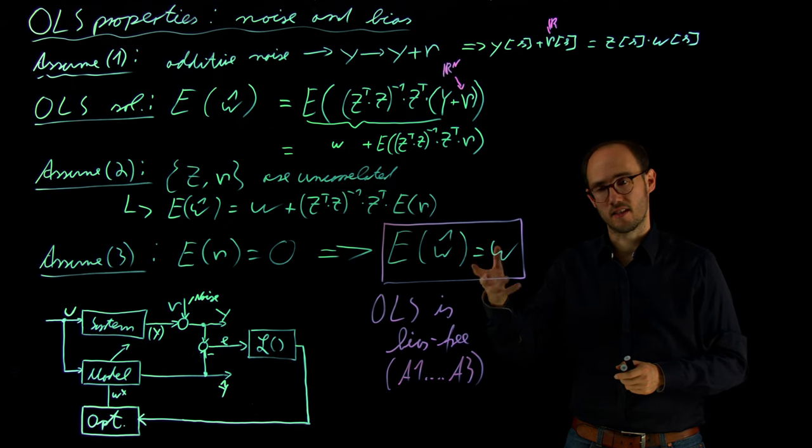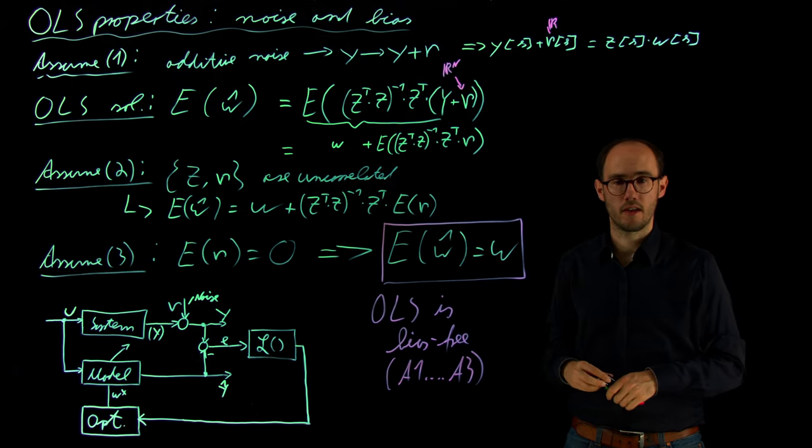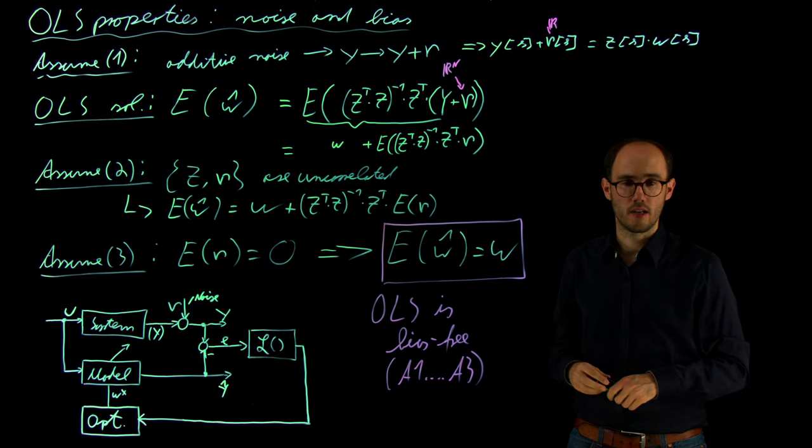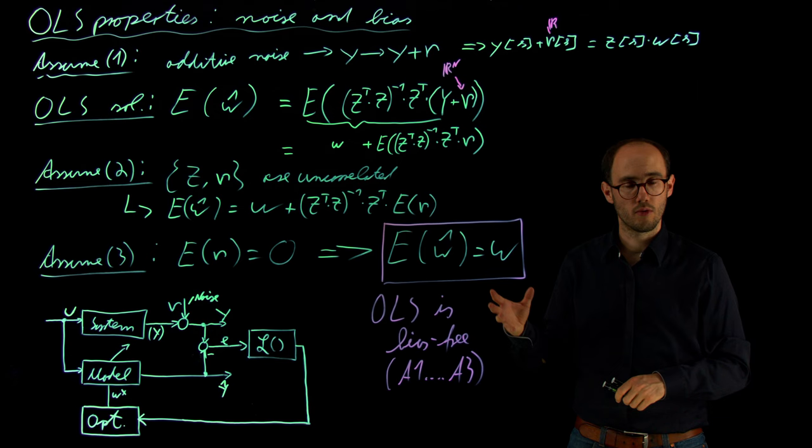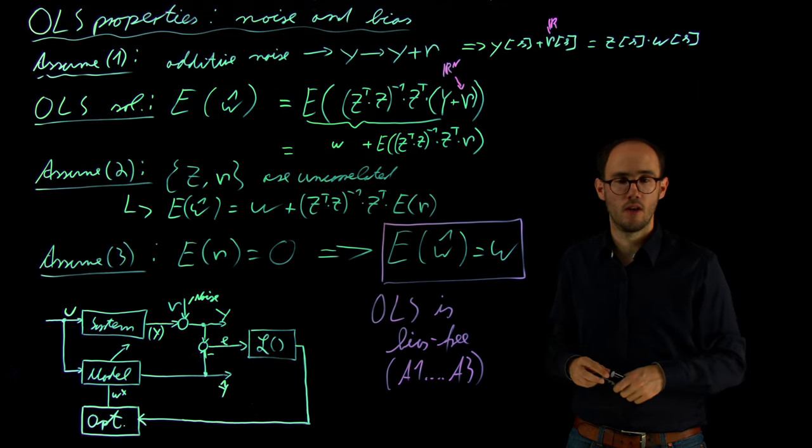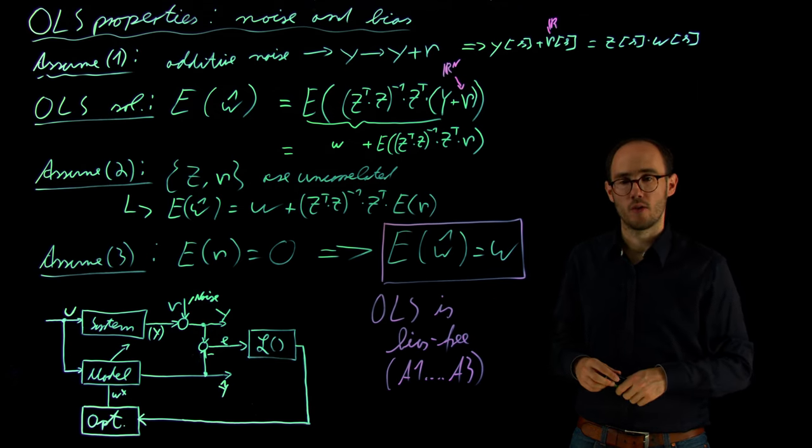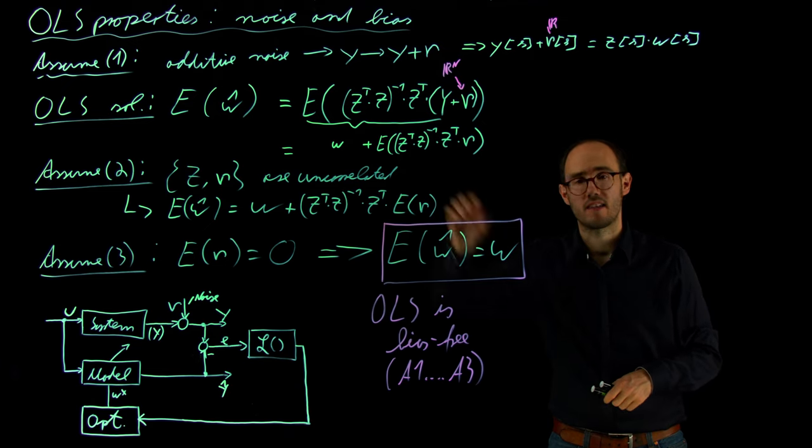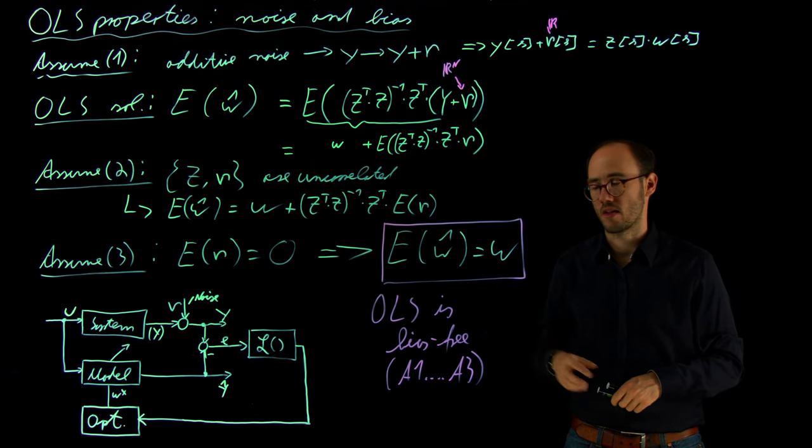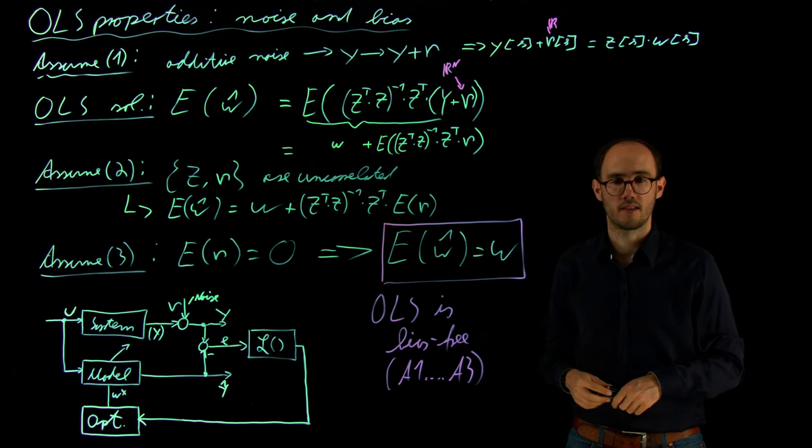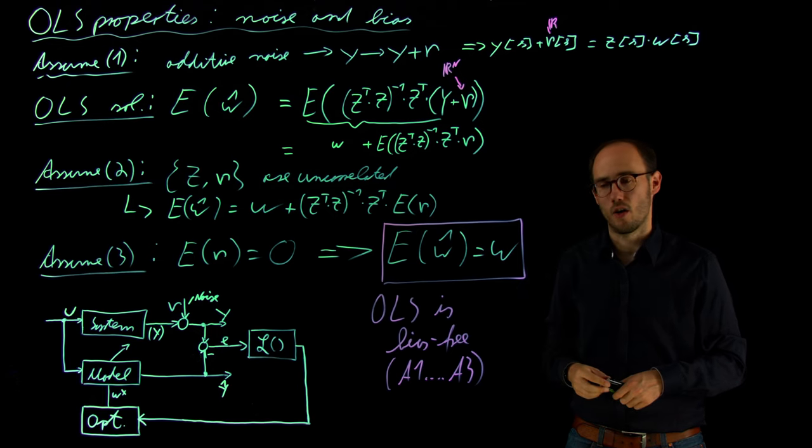And we didn't see this theoretical result, which we have here in the lightboard, in the previous computational example with the Julia code, because in the Julia implementation, we just had a limited number of data which we had utilized to calculate the ordinary least square solution. While this investigation, of course, is a theoretical investigation based on random variables, which in simplified words assumes that we are able to process an infinite amount of high quality data.